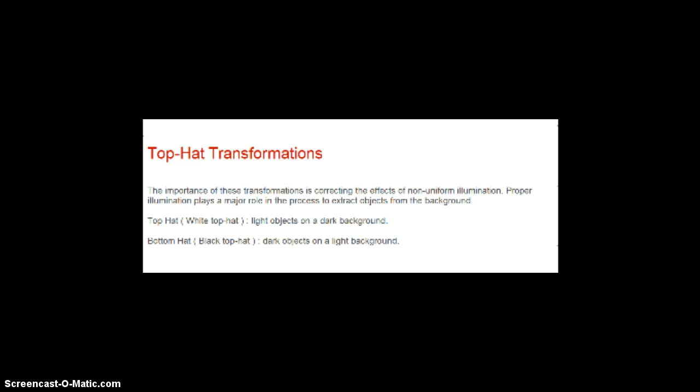An important use of the top hat transformation is correcting the effects of non-uniform illumination. Proper illumination plays a central role in extracting objects from the background. The top hat transform is used for light objects on a dark background, and the bottom hat transformation is used for the converse. For this reason, the names white top hat and black top hat are frequently used when referring to both transforms.